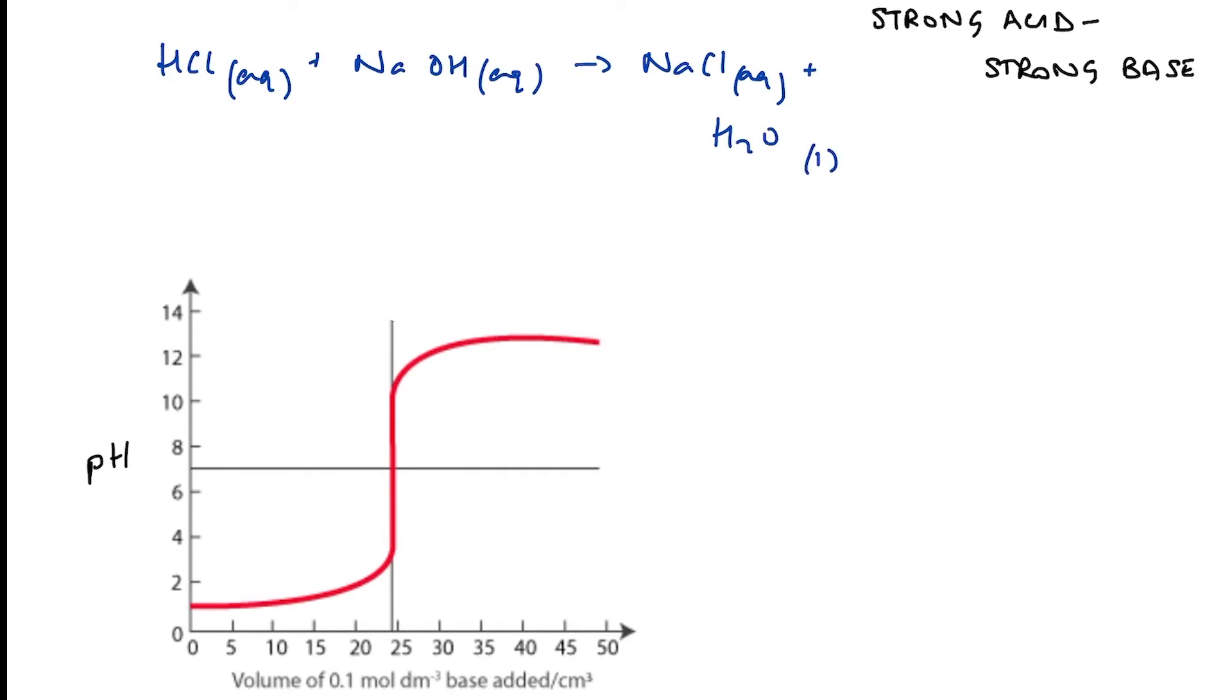And if I'm to remove the spectator ions, those would be the sodium and the chloride ions, then I'm left with the ionic equation for neutralization. Hydrogen ions react with hydroxide ions to form water molecules. And this is happening in a molar ratio of one to one. Now, during a titration, when the concentration or the moles of hydrogen ions equals the moles of hydroxide ions, then we have neutralization.